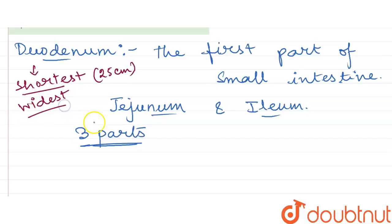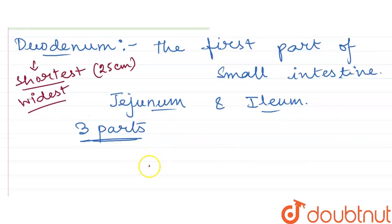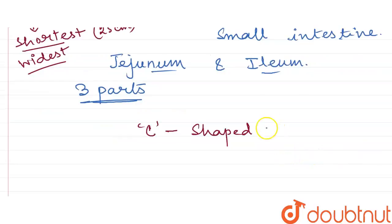This is shortest and widest part, and it looks like the English alphabet C. That means it is a C-shaped organ and it looks like horseshoe. That means this is horseshoe-shaped.